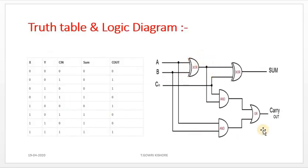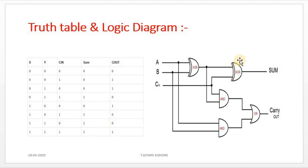This is the logic diagram and truth table of the full-adder. It is a combination of two half-adders and one OR gate. Each half-adder is a combination of one XOR gate and one AND gate. So this is one half-adder, this is another half-adder, and this is an OR gate.